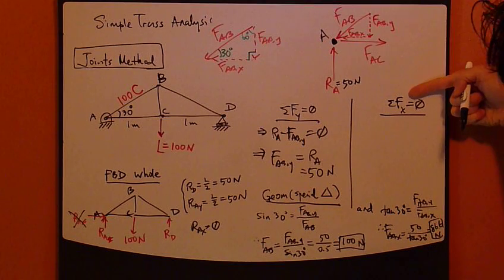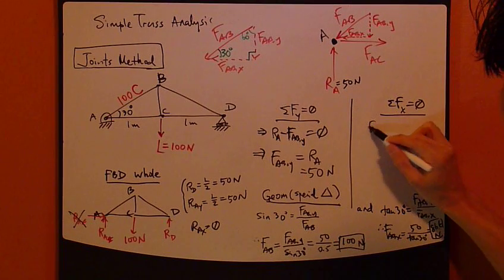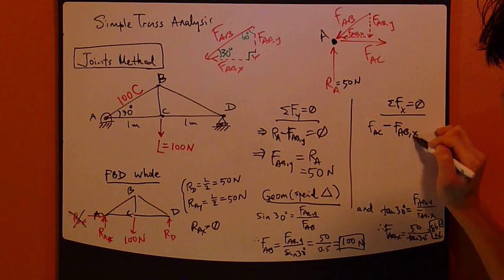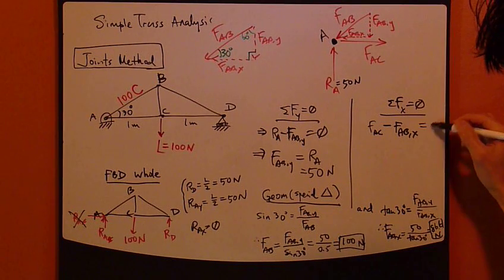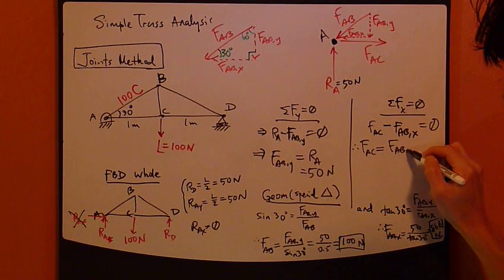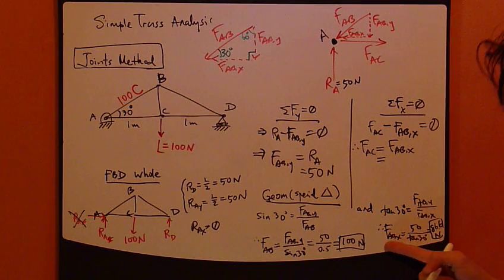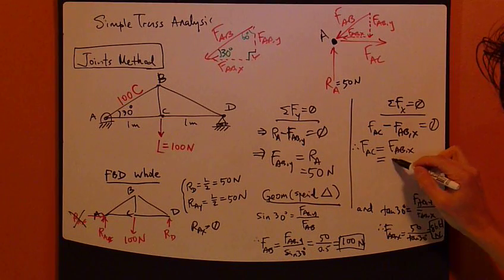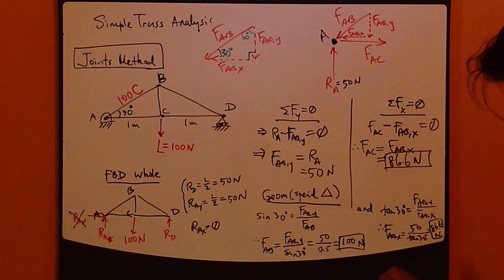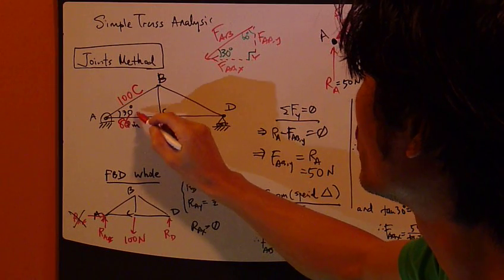Applied to the entire free body diagram, I have FAC minus FABX. Only these two guys are in the x direction, that's all. Therefore, the unknown is FAC. So FABX was just found from geometry, from this special triangle, to be 86.6. And that's all. That's the unknown. So FAC is 86.6 Newton.